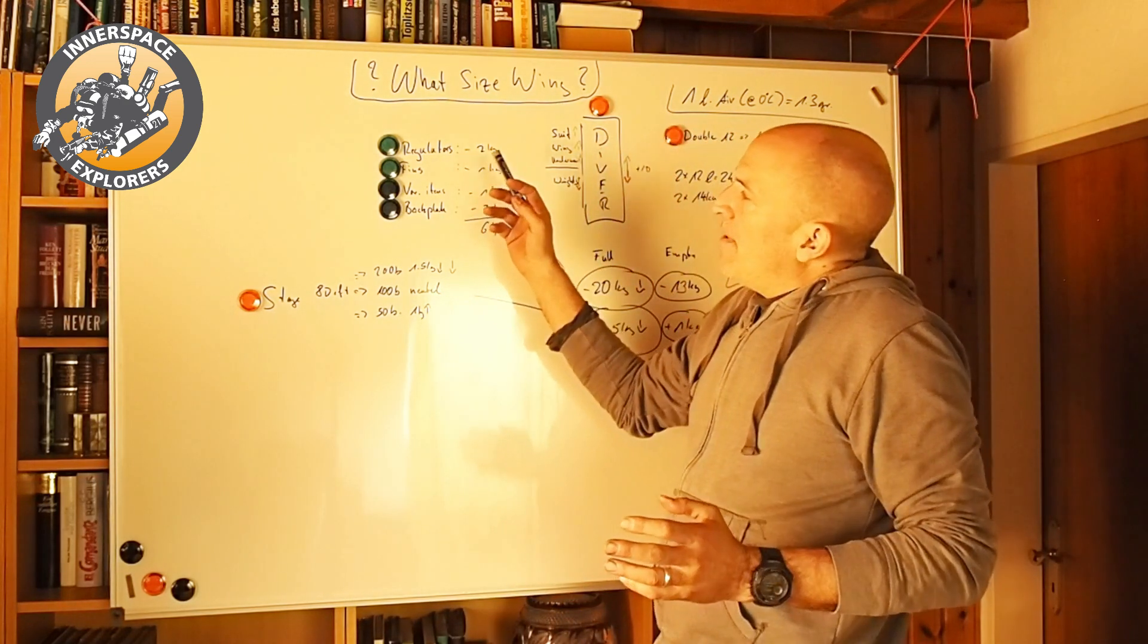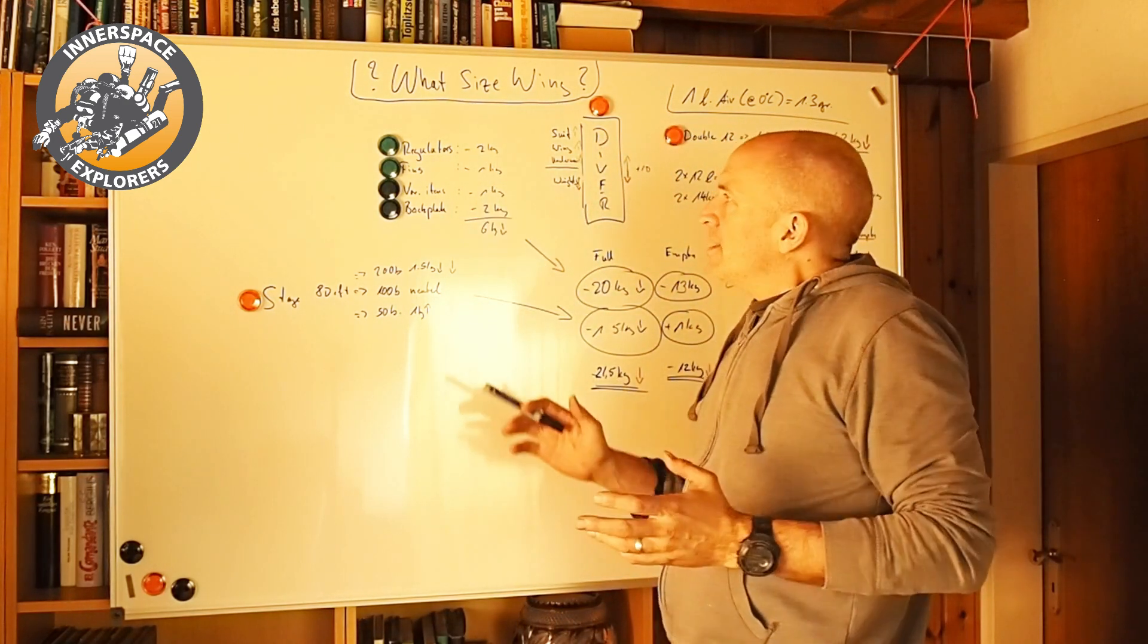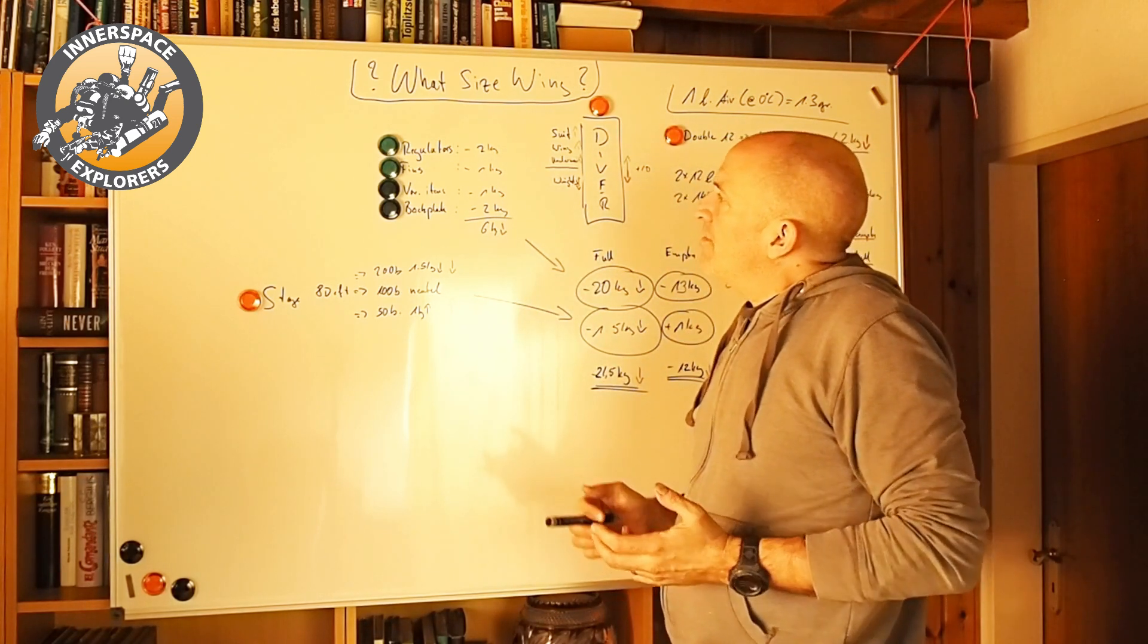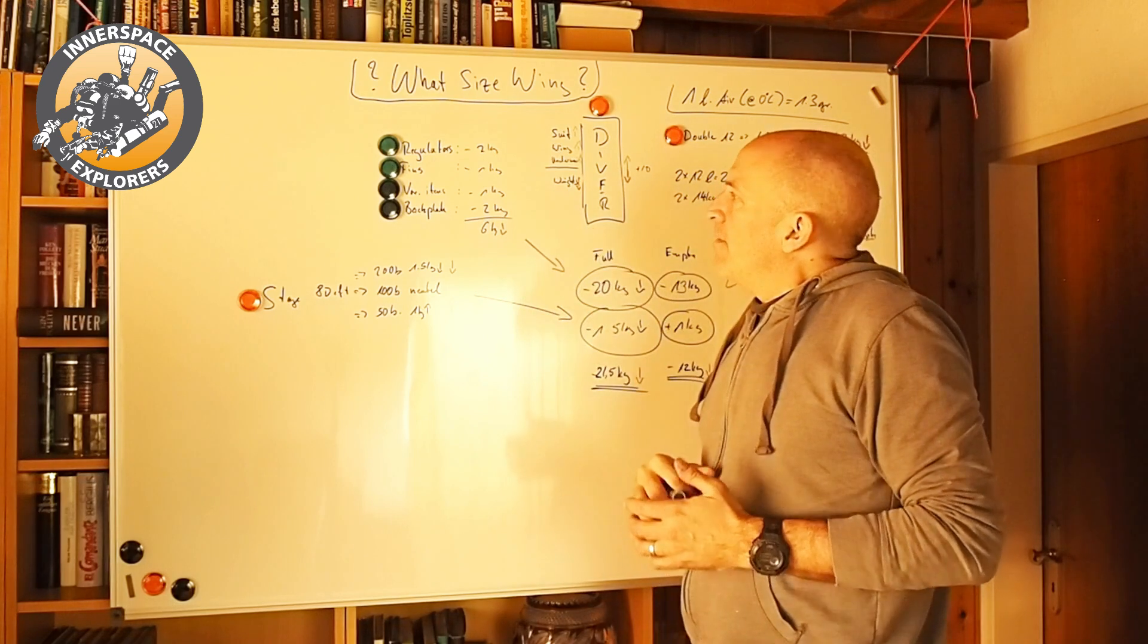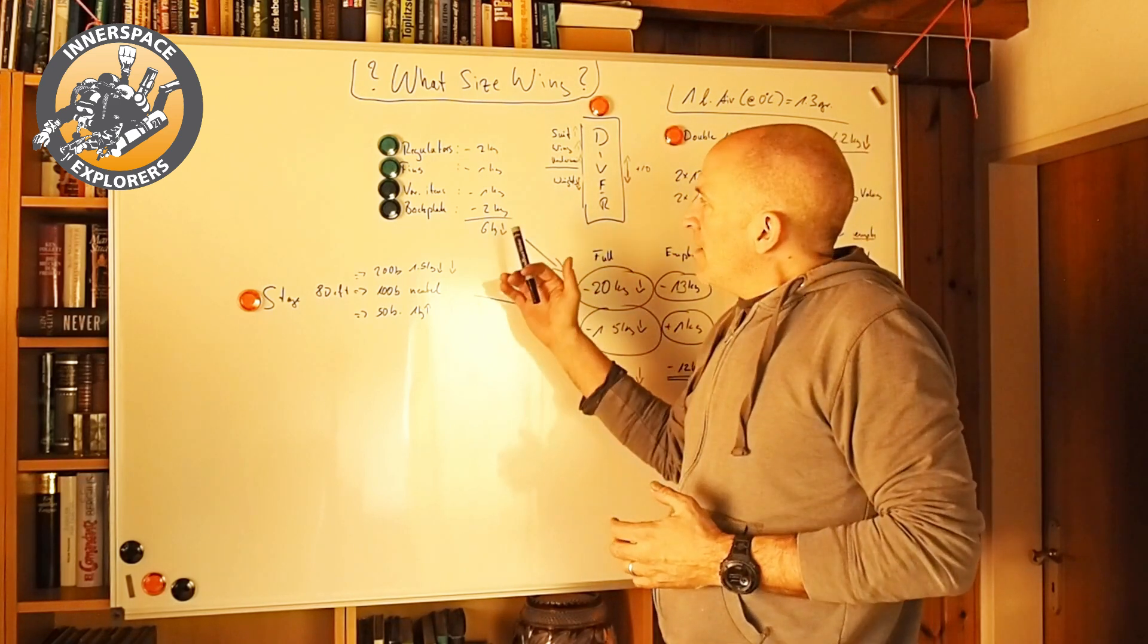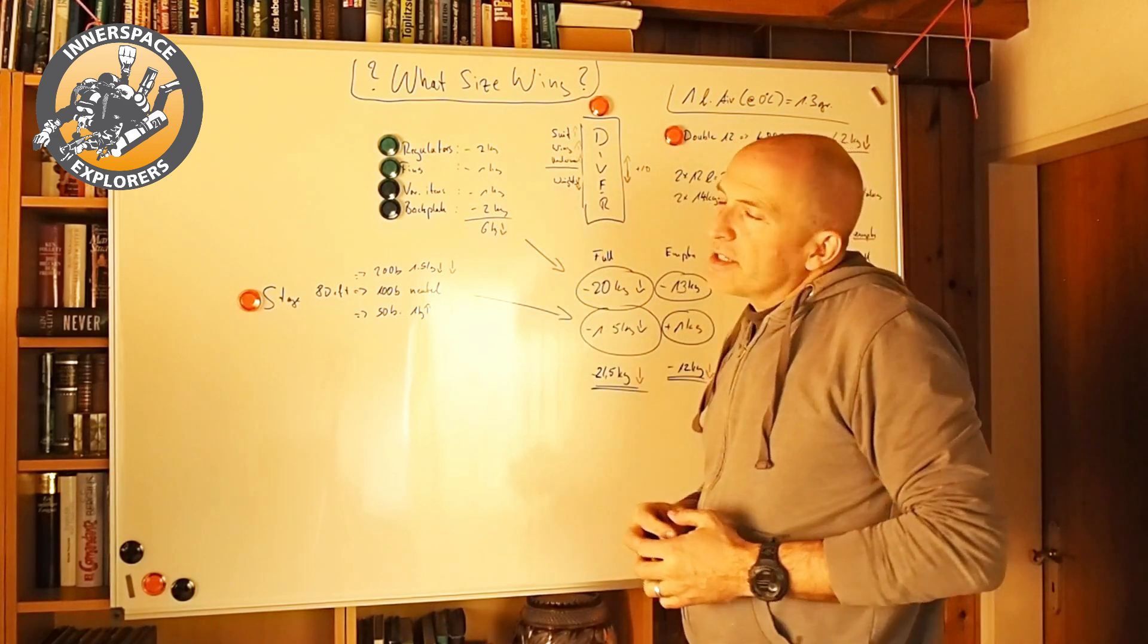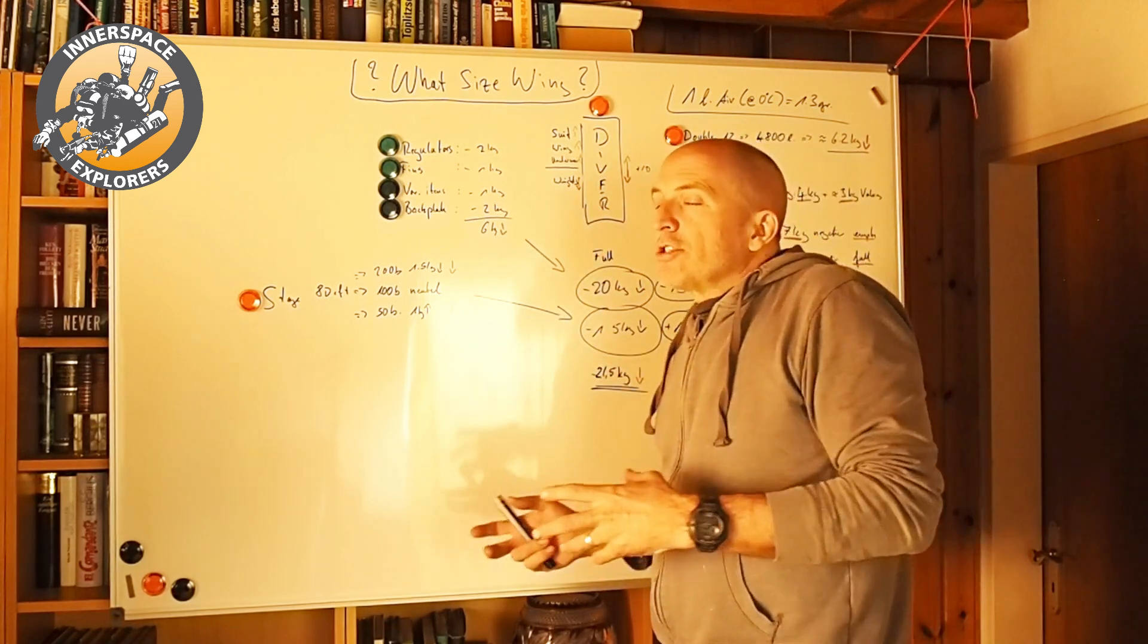My regulators are about two kilos negative. The fins that I use, the heavy rubber fins, are about a kilo negative. I put another kilo for various items. And my backplate is about two kilograms negative in the water. So that sums up to six kilos of additional weight.